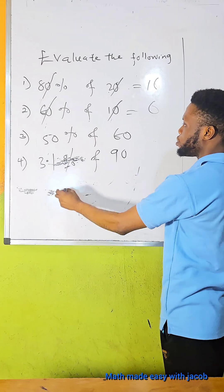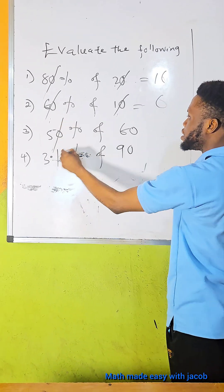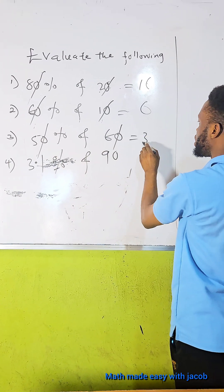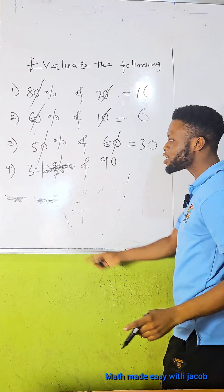Now, to the next question, we have zero will cancel zero. Five times six is what? Thirty.